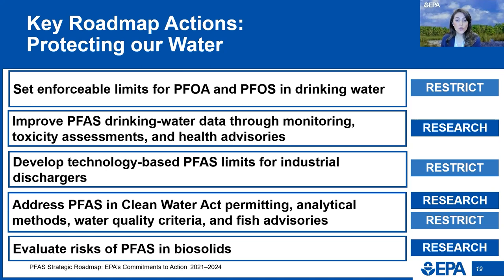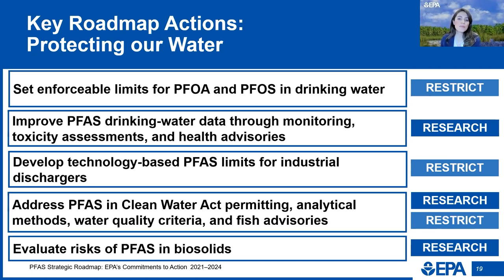EPA recently hosted two webinars covering an overview of the proposed rule. We'll be holding a virtual public hearing on the proposed rule on May 4th, and you can learn more at epa.gov/PFAS. EPA is also working to improve drinking water data through monitoring, toxicity assessments, and health advisories. Through our fifth unregulated contaminant monitoring rule, or UCMR 5, this program is testing for 29 PFAS chemicals from 2023 through 2025 in thousands of drinking water systems nationwide.